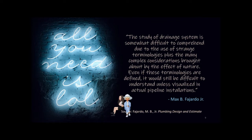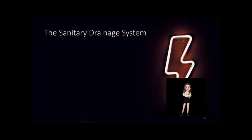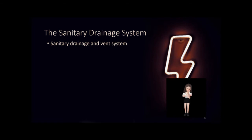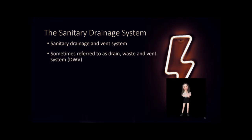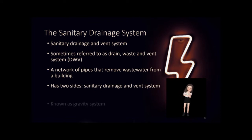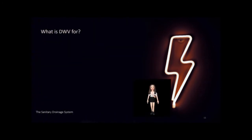Even if these terminologies are defined, it would still be difficult to understand unless visualized in actual pipeline installations. The sanitary drainage system, also called the drain, waste, and vent (DWV) system, is a network of pipes that removes wastewater from a building. It has two sides and is also known as a gravity system. D stands for the drainage pipe, which receives and conveys discharges from the water closet. W stands for the waste pipe, which receives discharges from any fixture except the water closet.